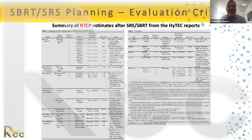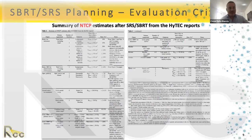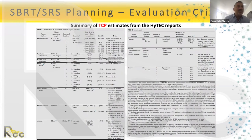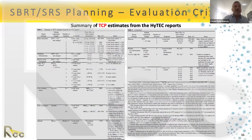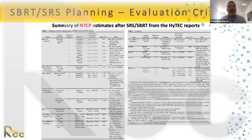The HyTEC summary article contains detailed tables with dose constraints by fractionation for each organ at risk. For example, for the carotid artery at five fractions, the Dmax should be between 20 and 30 Gy. Tables cover important organs such as lung, brain, liver, and adrenal glands, as well as target coverage and TCP values for specific sites.